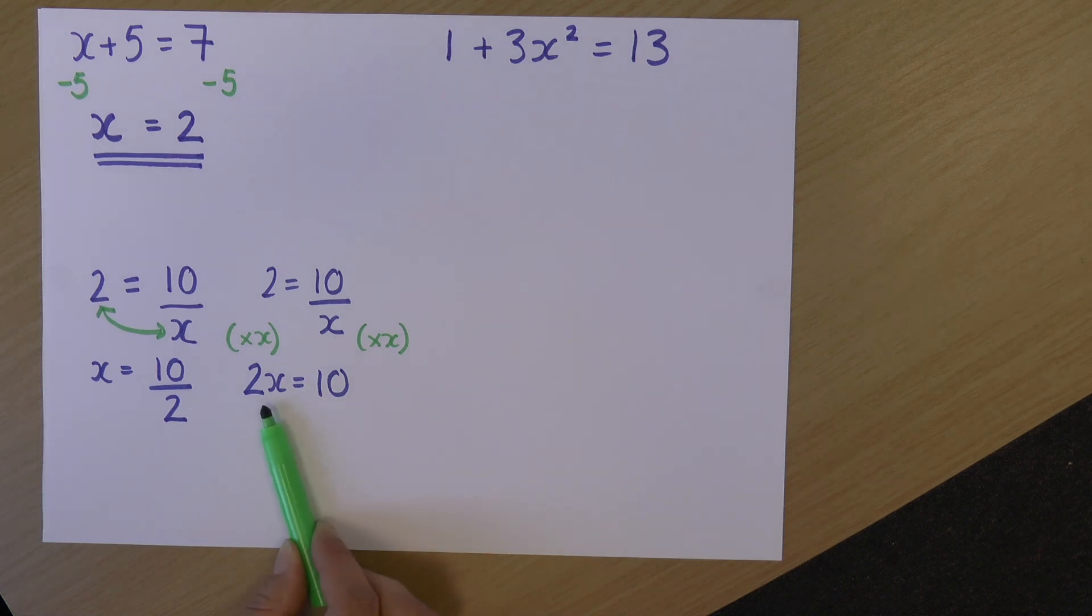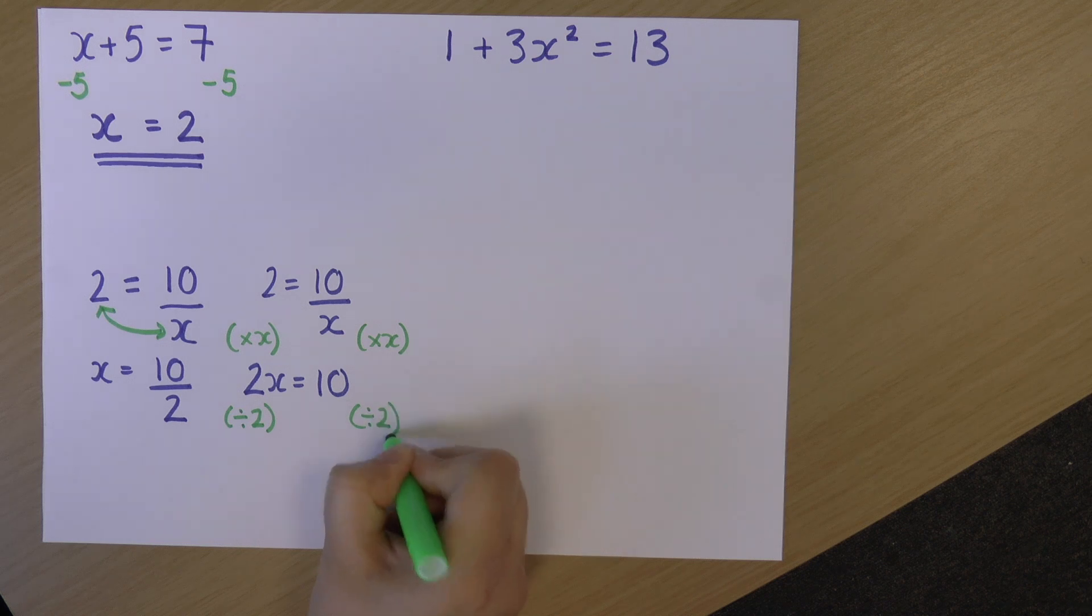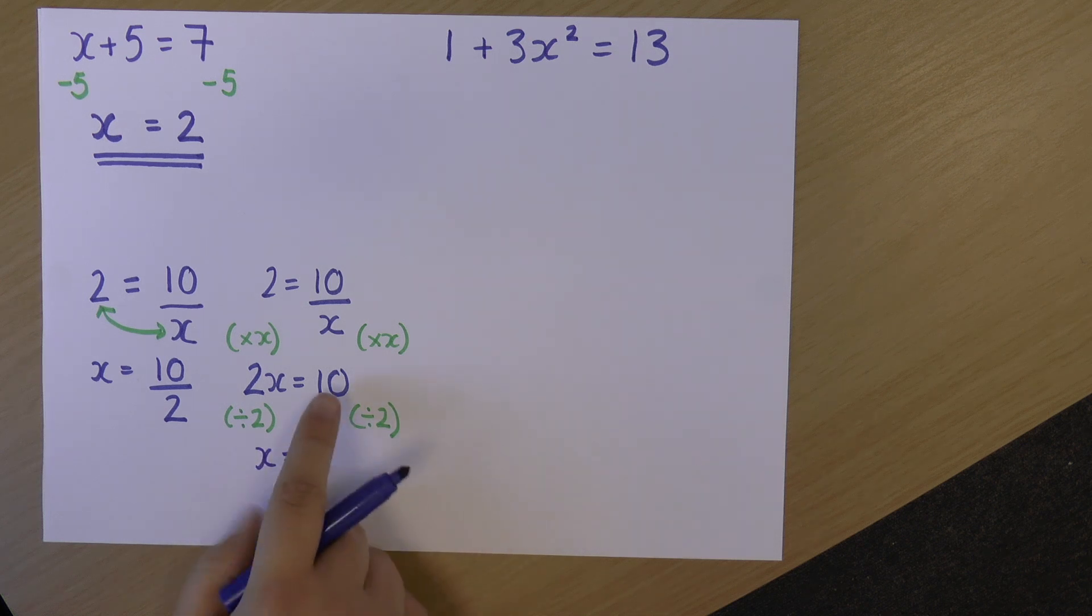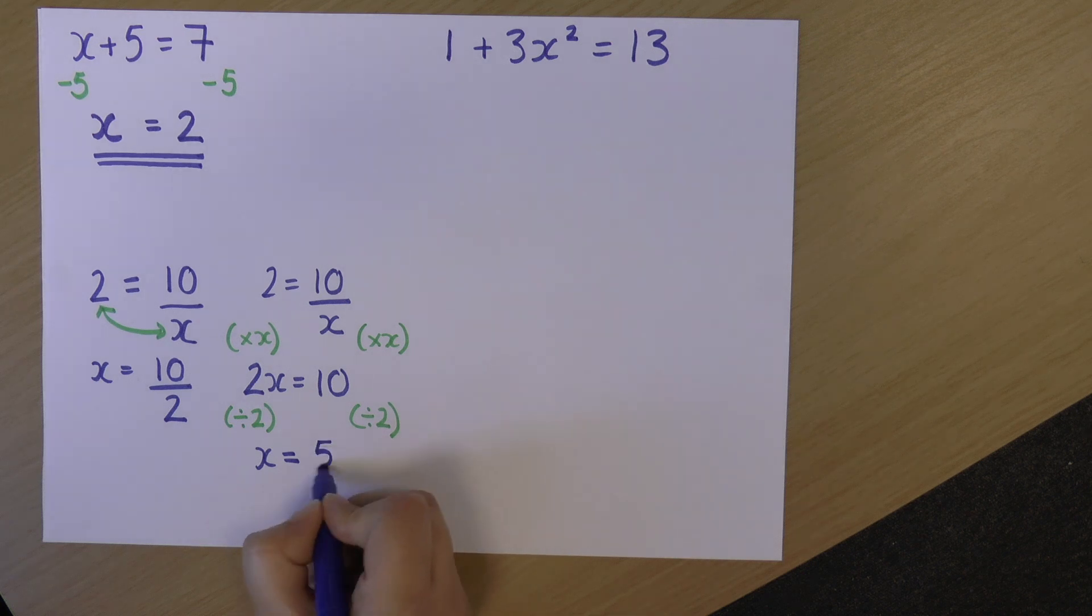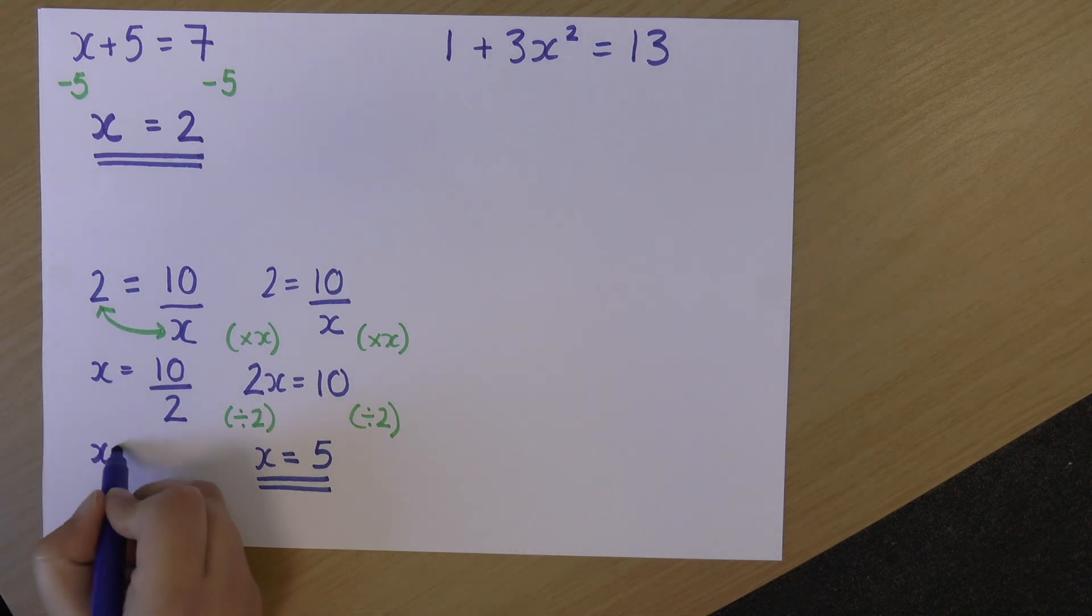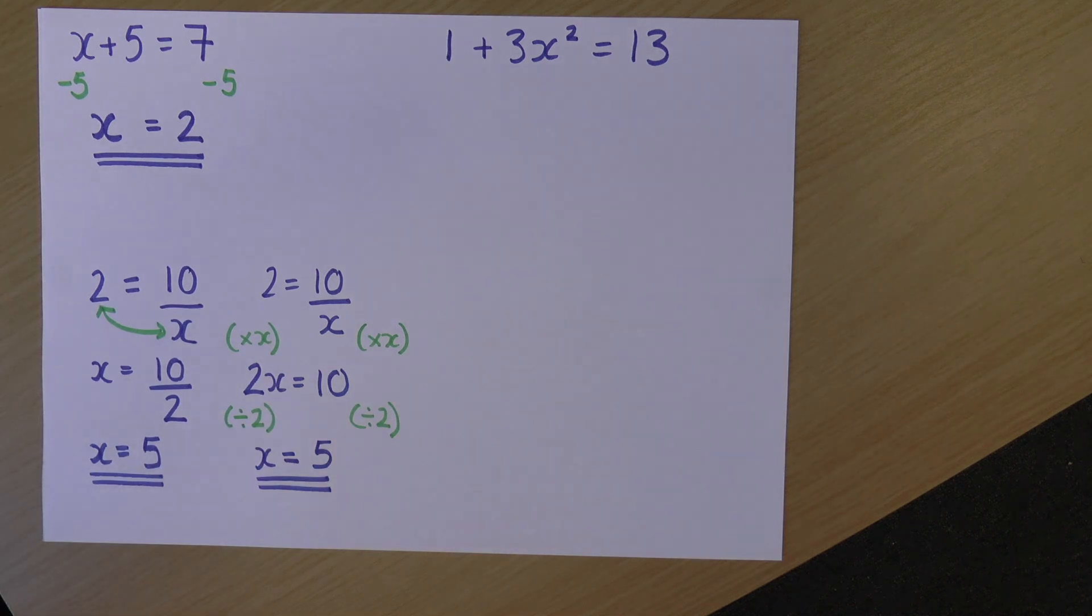This still doesn't give me x on its own. I want to get rid of this 2. So this is 2 times x. So to get rid of the 2, I divide. So I'm dividing both sides by 2. 2x divided by 2 is just x. And on this side, I've got 10 divided by 2, which is 5. And over here, I stopped before getting to the final answer, but you can see I've also got 10 divided by 2. So again, 10 divided by 2 is 5. So that's two ways of getting to the answer when we have something that looks like this. And it doesn't just have to be numbers and letters. It could be, for example, trigonometric functions, speed-time equations, anything like that.